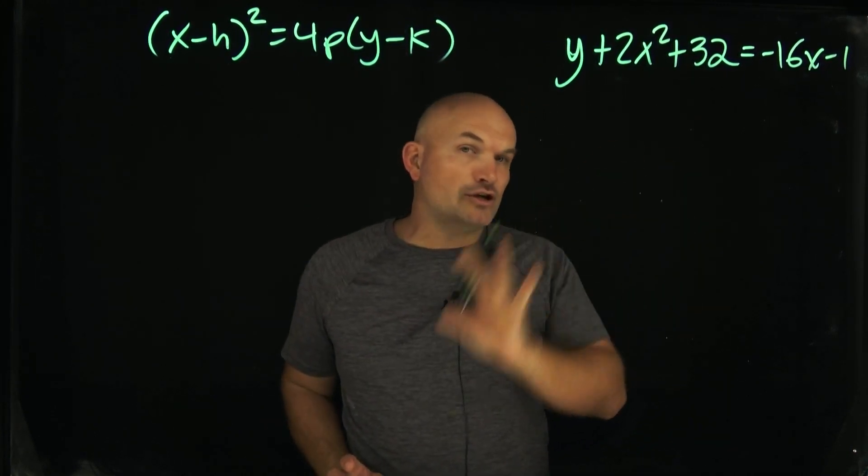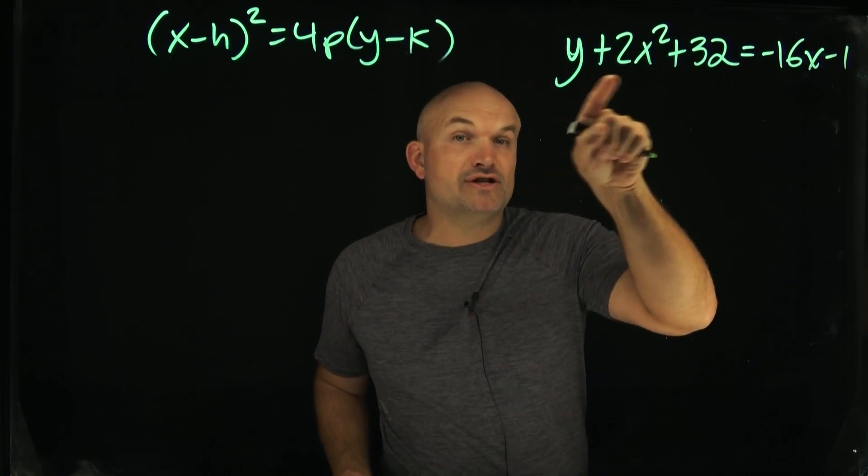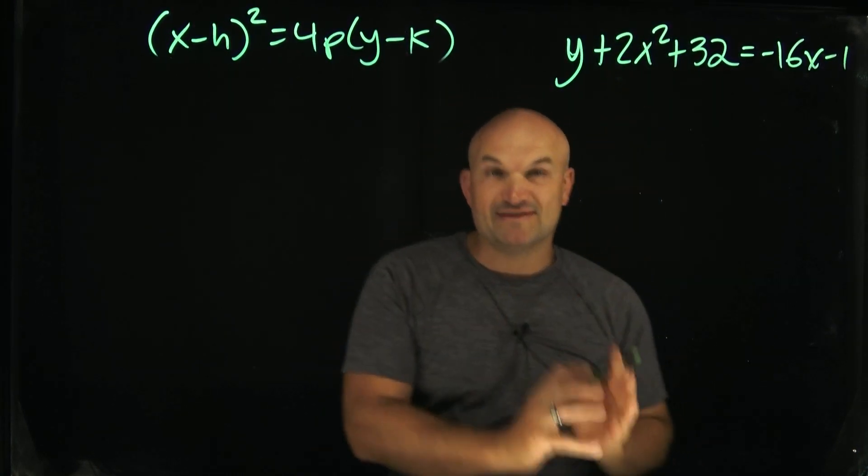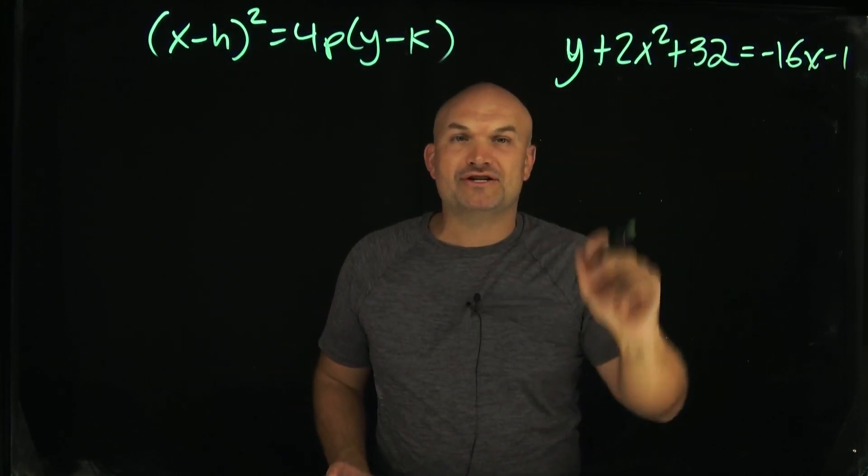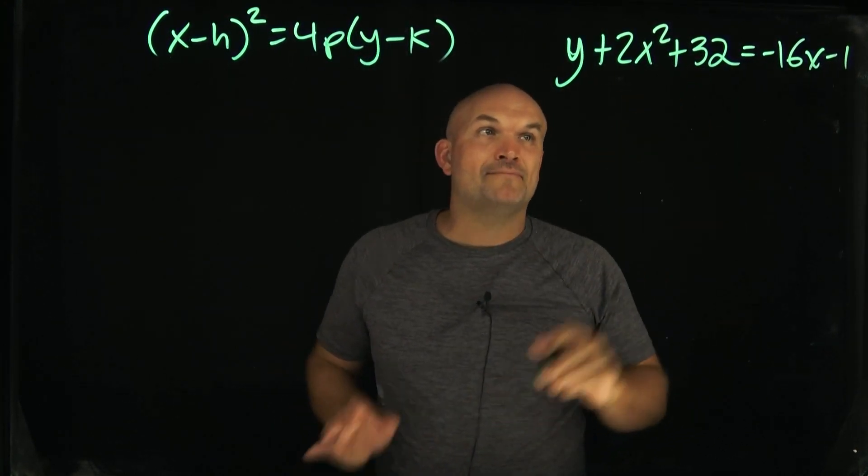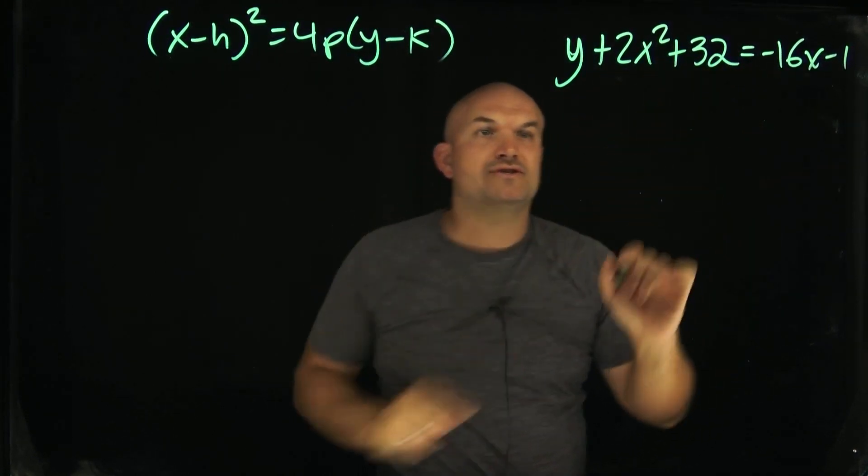However, in this problem, we can actually use a little trick here to make our life a little bit easier. Notice how my x squared has a coefficient of two. And if you remember when we're completing the square, we have to factor out a two. I like this 32 because I can factor out a two from the 32. So I'm actually going to leave this here. Now to get my x's all to the same side, I'm going to add a 16x over here and I'm going to subtract the y to the other side.